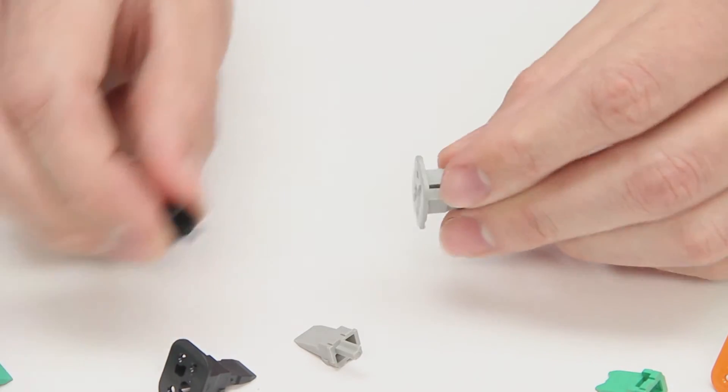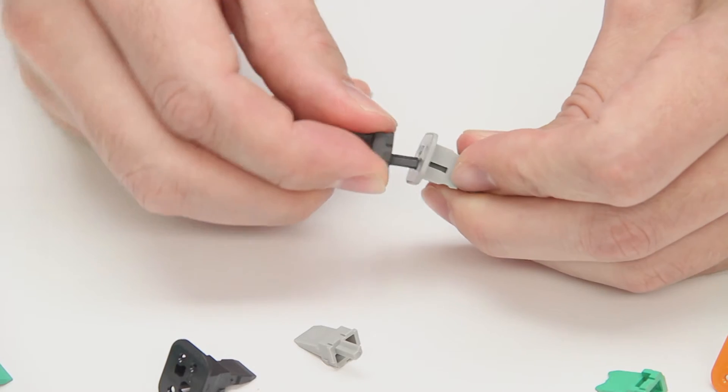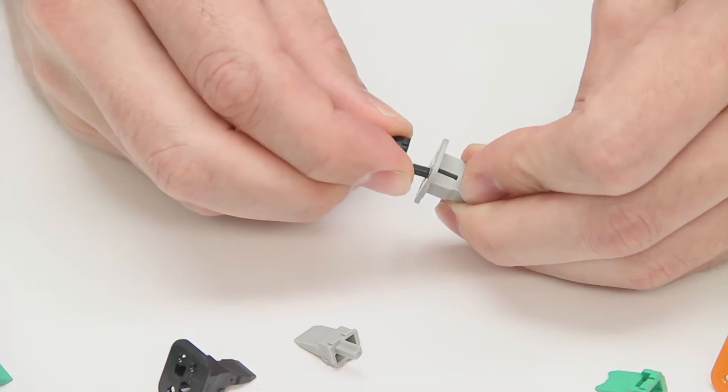If you try to mix the key, they will not go together. Here we have an A key and a B key.